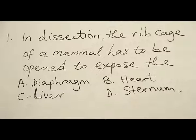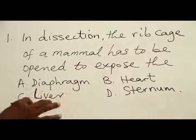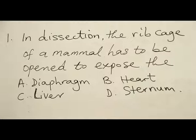So the diaphragm — you don't need to open the ribcage to see the diaphragm. C is the liver. The liver is below the diaphragm, just on top of the stomach. And D is the sternum — the breastbone, which is part of the ribcage. So the organ that needs to be exposed inside the ribcage is the heart.